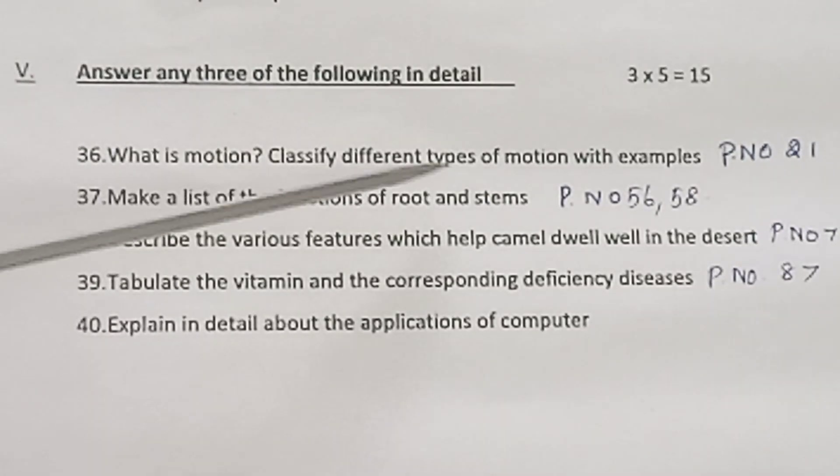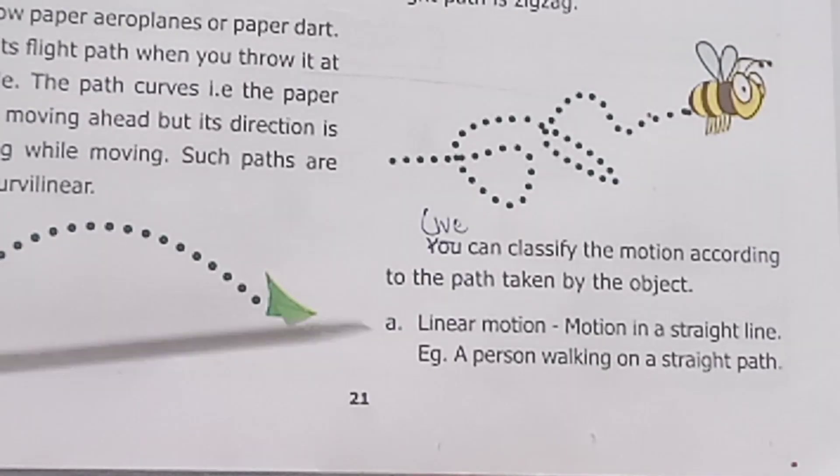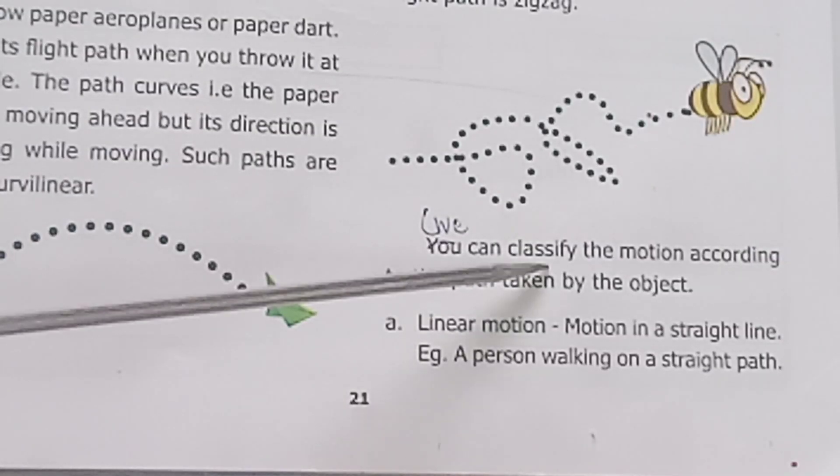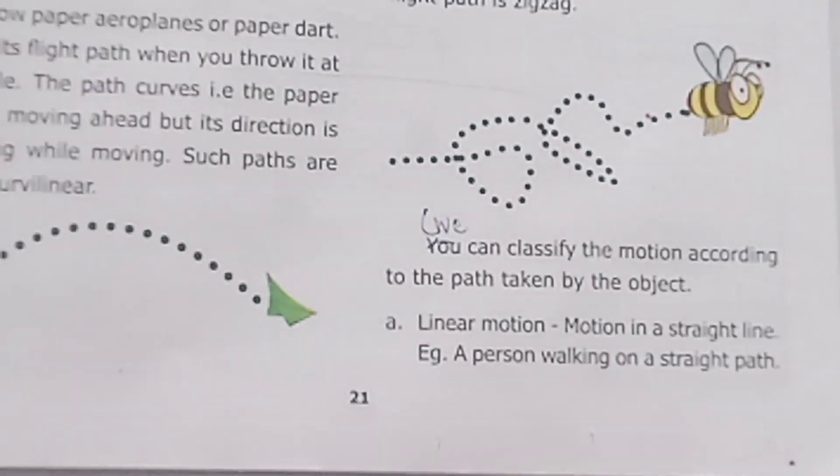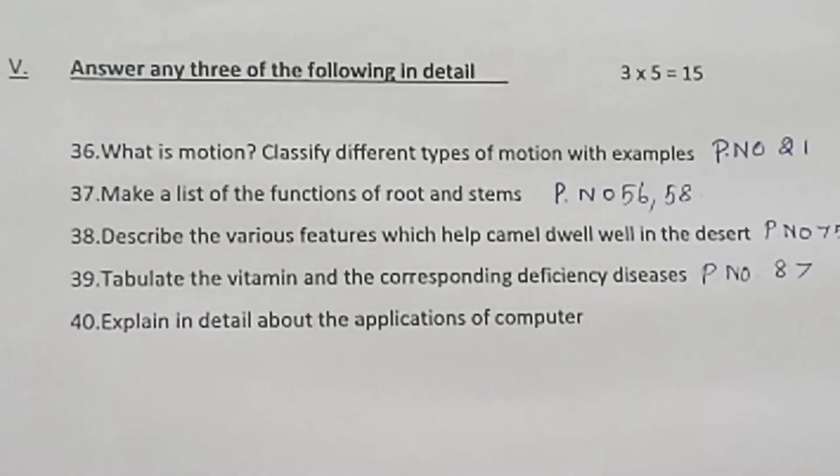Question 36. What is motion? Classify different types of motion with examples. Page number 21. We can classify the motion. Start from page 22: Zigzag motion in a crowded street.